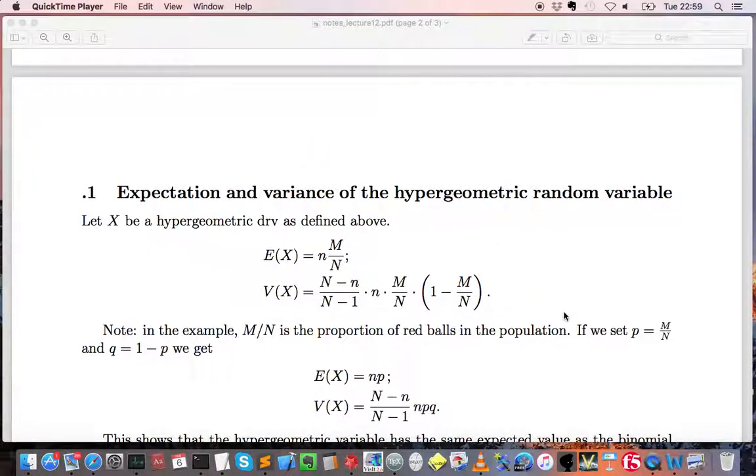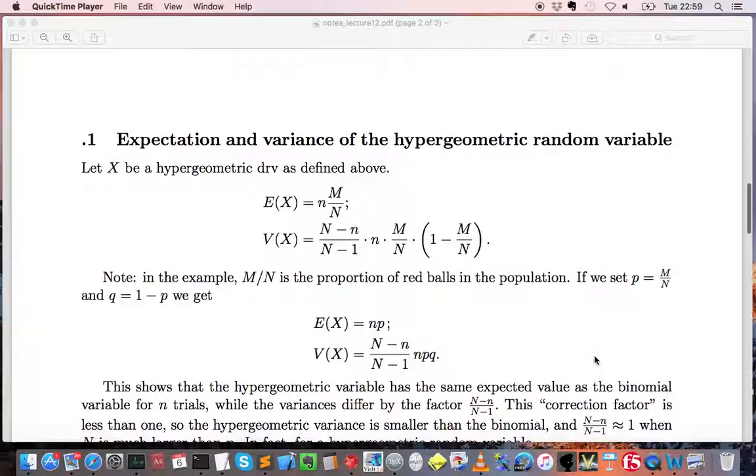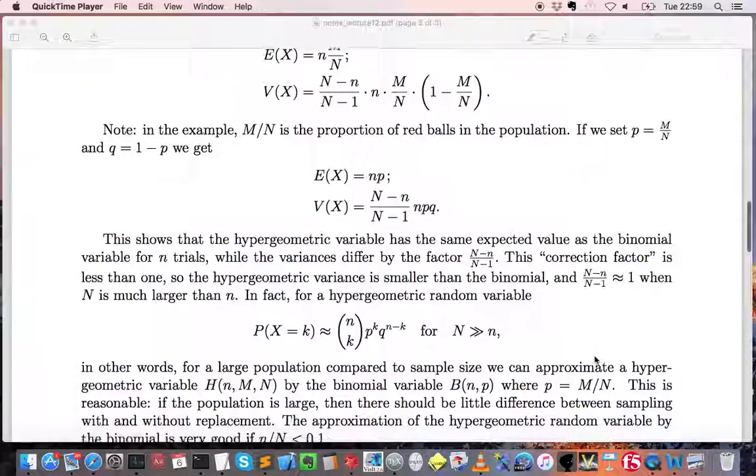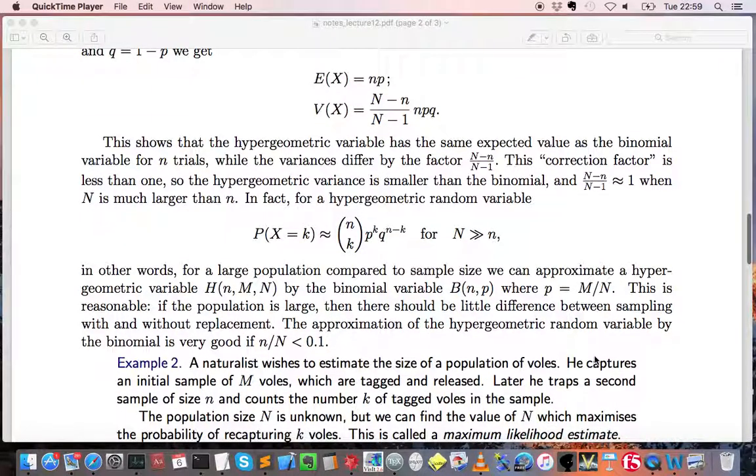We made a comment on why the hypergeometric random variable tends to a binomial random variable when the number capital N is much larger than n.